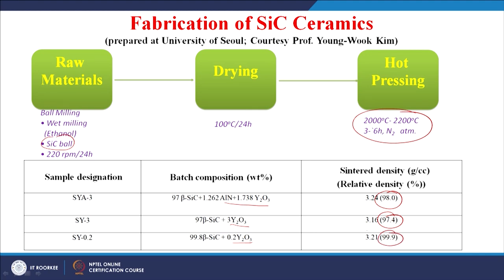In this study, three different samples were used. The batch compositions are: beta silicon carbide with aluminum nitride and yttrium oxide as additives totaling 3 weight percent; the same 3 weight percent of only yttrium oxide in the next batch; and a very small amount of yttrium oxide—0.2 weight percent—in the third batch. The samples are designated as SyA3, Sy3, and Sy0.2.